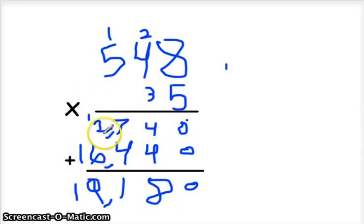Then you add 2,740 plus 16,440. So you put the 1 down, then the 1 up there to the 1,000s place. And 2 plus 6 equals 8, plus the 1 equals 9. You write the 9 down and 1 plus nothing equals 1. So your answer is 19,180.